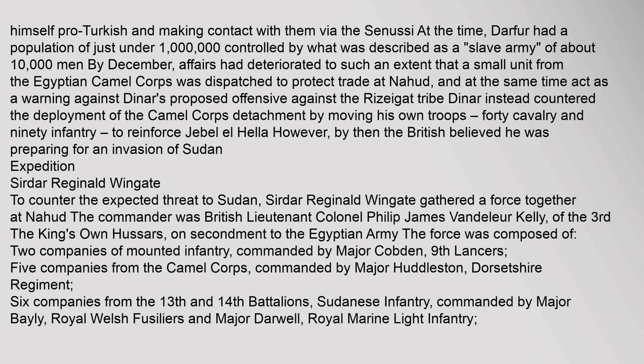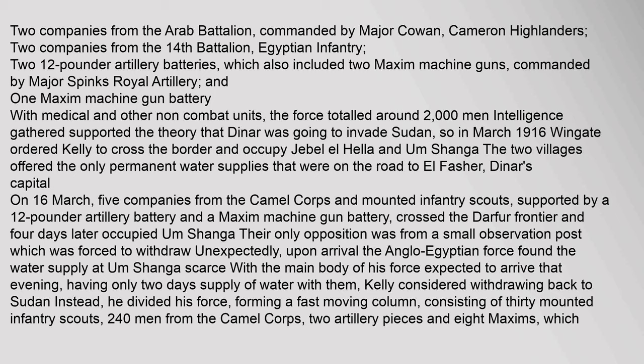By then the British believed Dinar was preparing for an invasion of Sudan. Sirdar Reginald Wingate gathered a force together at Nahud. The commander was British Lieutenant Colonel Philip James Vandelier Kelly of the 3rd the King's Own Hussars, on secondment to the Egyptian Army. The force was composed of two companies of mounted infantry commanded by Major Cobden, 9th Lancers; five companies from the Camel Corps commanded by Major Huddleston, Dorsetshire Regiment; six companies from the 13th and 14th Battalions Sudanese infantry commanded by Major Bailey, Royal Welsh Fusiliers, and Major Darwell, Royal Marine Light Infantry; two companies from the Arab Battalion commanded by Major Cowan, Cameron Highlanders; two companies from the 14th Battalion Egyptian infantry; two 12-pounder artillery batteries including two Maxim machine guns commanded by Major Spinks, Royal Artillery; and one Maxim machine gun battery with medical and other non-combat units. The force totaled around 2,000 men.